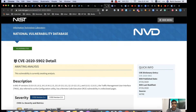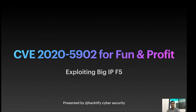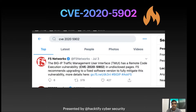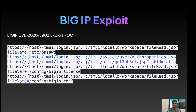We've identified the vulnerability name and number. This presentation is titled 'CVE-2020-5902 for Fun and Profit' where we will exploit BIG-IP F5 servers. It was released on July 3rd when F5 Networks tweeted that the Traffic Management User Interface — TMUI — has a remote code execution vulnerability with ID CVE-2020-5902.